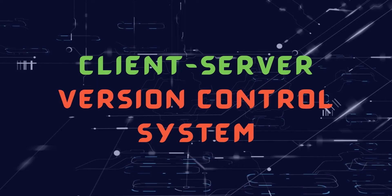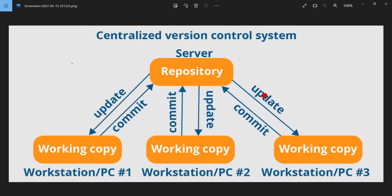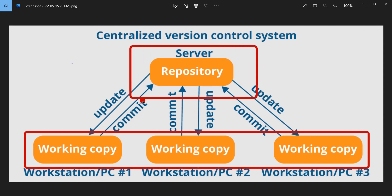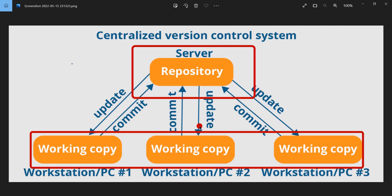In a typical client-server architecture there is one server and many clients which are connected to the server. Similarly, in a client-server version control system, which is also known as a centralized version control system, there is one server and many clients. The clients can be developers or automation engineers who connect with the server and perform tasks.